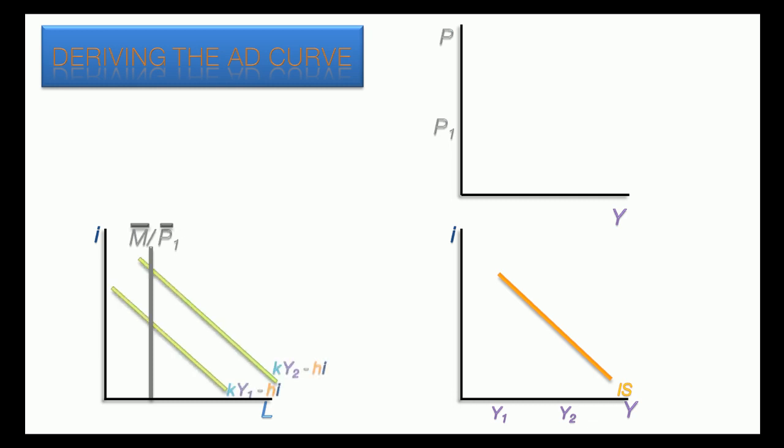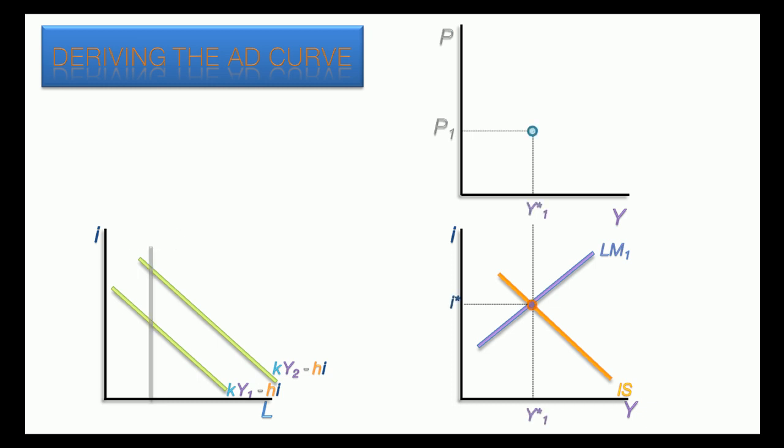So, the LM curve is drawn down for the first price level, producing the first point at the intersection of P1 and the resulting equilibrium level of national income.